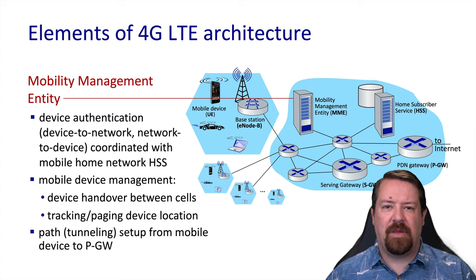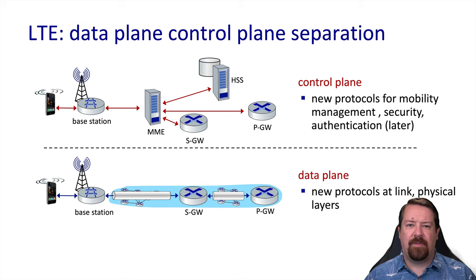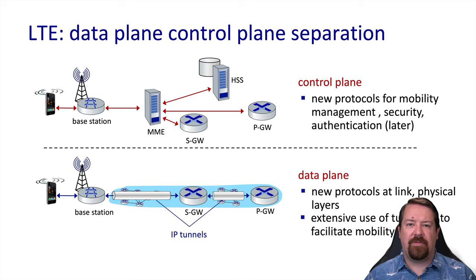The mobility management entity supports authentication of the device, keeps track of which cell a device is connected to for call routing, and assists in the handoff as the device moves from one cell to another. It also sets up the tunneling used between the device and the packet gateway to reach the internet. Just as in the rest of the internet, there is a distinction between the control plane and the data plane. The data plane makes heavy use of tunneling protocols, while the control plane handles mobility, security, and authentication. Because we have a device sending IP traffic over a core running an IP network, we end up using IP over IP tunnels.